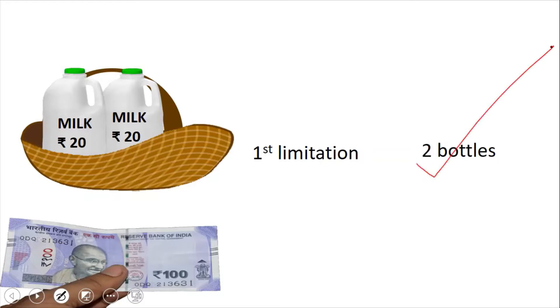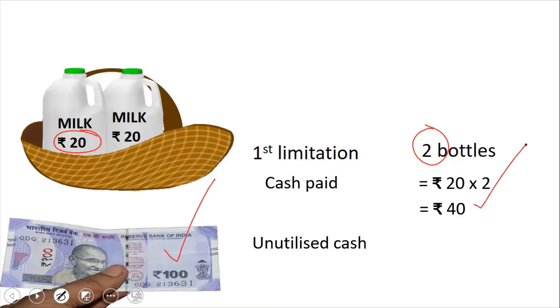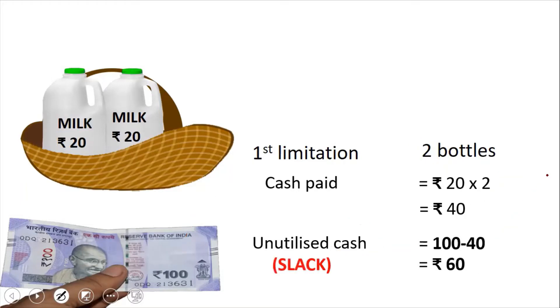You have bought just two bottles of milk. The cash paid is two bottles multiplied by the price of one bottle, which is 20 rupees — so 40 rupees. The unutilized cash is 100 minus 40, or 60 rupees. This unutilized cash, or unutilized resource of 60 rupees, is known as the slack. Slack is nothing but the unutilized resources at a particular point, and for business, that particular point is the optimum production plan.